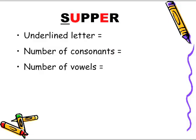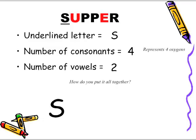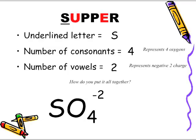Supper — the underlying letter is S. Number of consonants: four. Number of vowels: two. How do we put it all together? Start with S. Four consonants means four oxygens, so SO4. Two vowels means two negative charges — negative two. And because we're making reference to sulfur with the -ATE ending, we call this entire compound SO₄ negative two — sulfate.